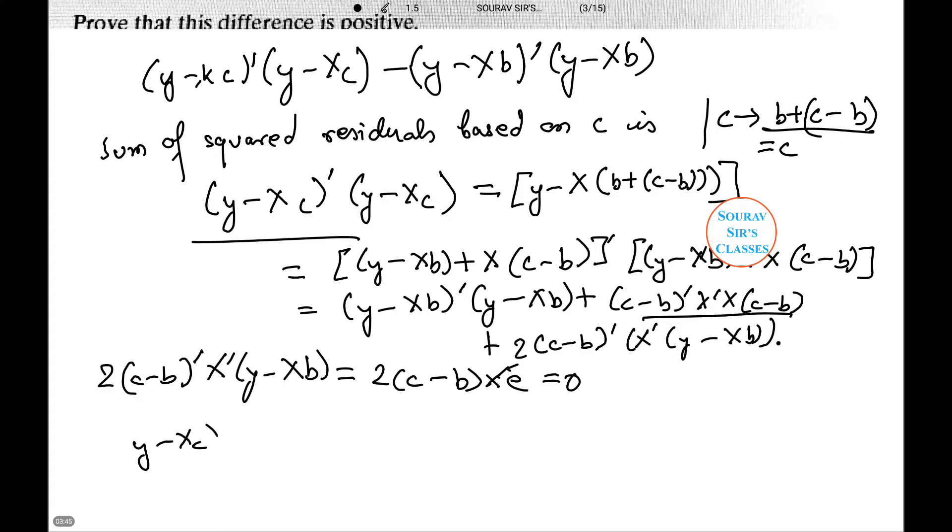Therefore, (y - Xc)' (y - Xc) equals e'e plus (c - b)' X'X (c - b). Or (y - Xc)' (y - Xc) minus (y - Xb)' (y - Xb) equals (c - b)' X'X (c - b). Let us take the minus side over here.